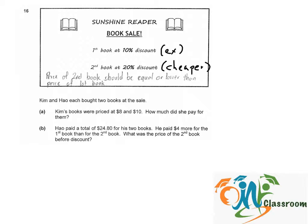Now let's go back to the question. Kim and Hal each bought two books at the sale. Kim's books were priced at $8 and $10. How much did she pay for the books? The $8 book is the cheaper one, so it gets the 20% discount, and the $10 book is the more expensive one, so it gets the 10% discount.